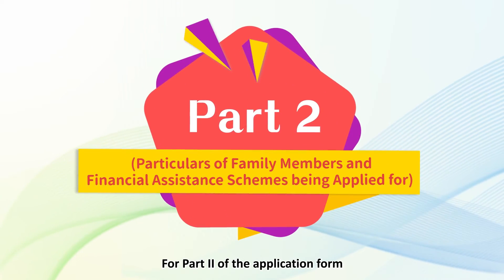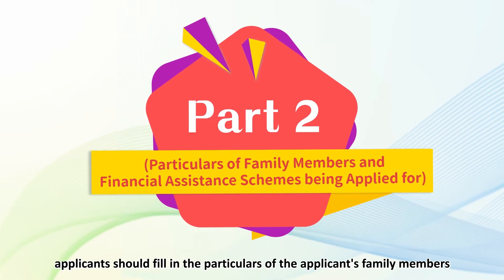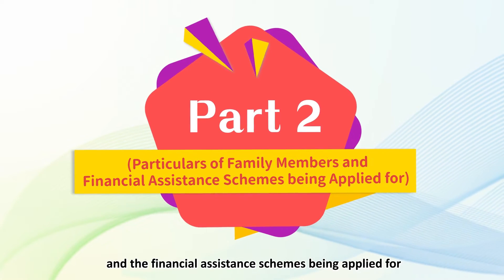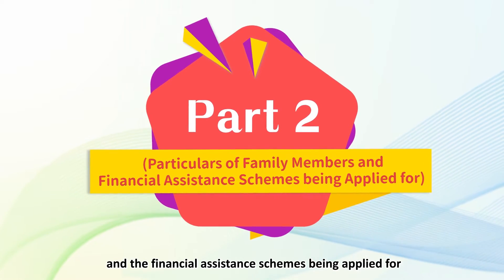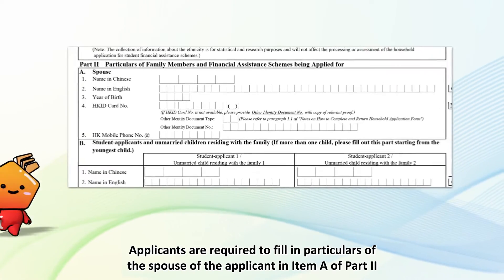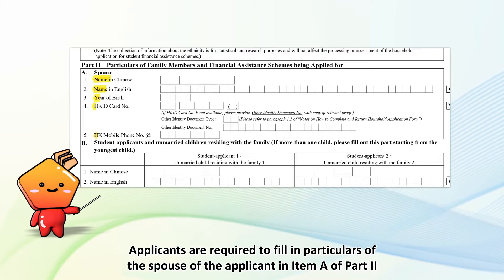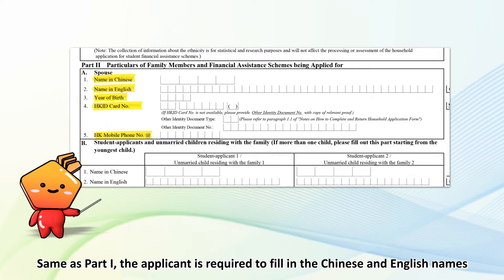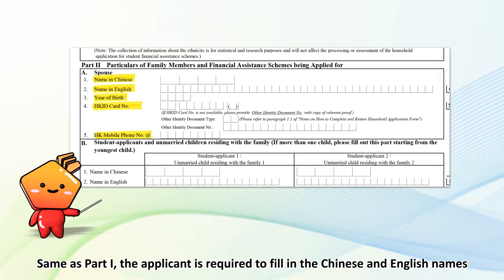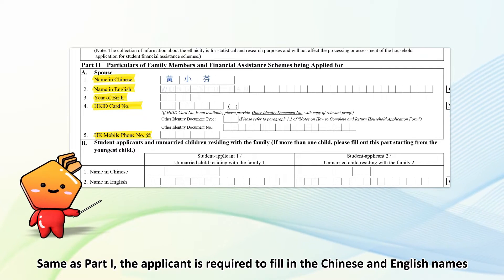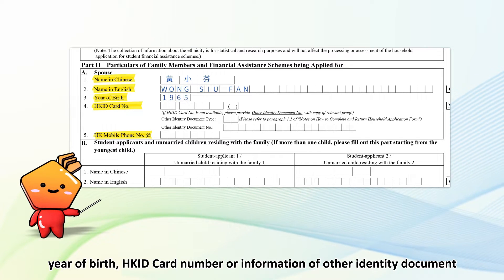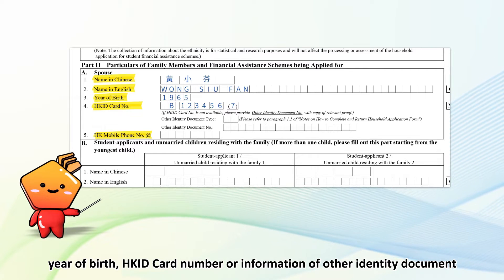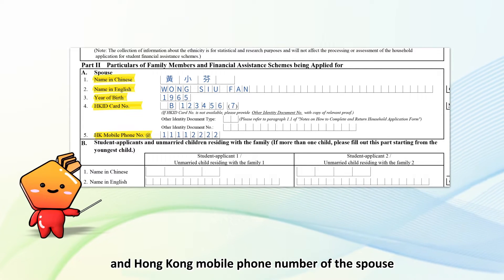For Part 2 of the application form, applicants should fill in the particulars of the applicant's family members and the financial assistance schemes being applied for. Applicants are required to fill in the particulars of the spouse of the applicant in Item A of Part 2. Same as Part 1, the applicant is required to fill in the Chinese and English names, year of birth, Hong Kong ID card number, or information of other identity document, and the Hong Kong mobile phone number of the spouse.